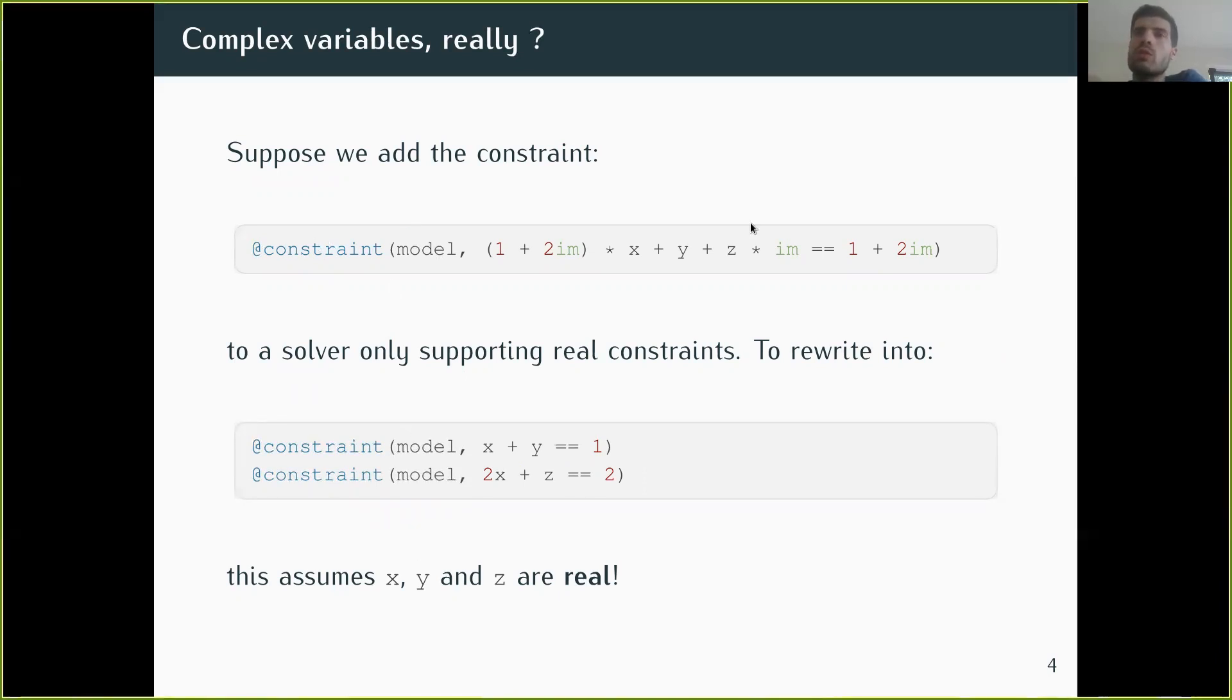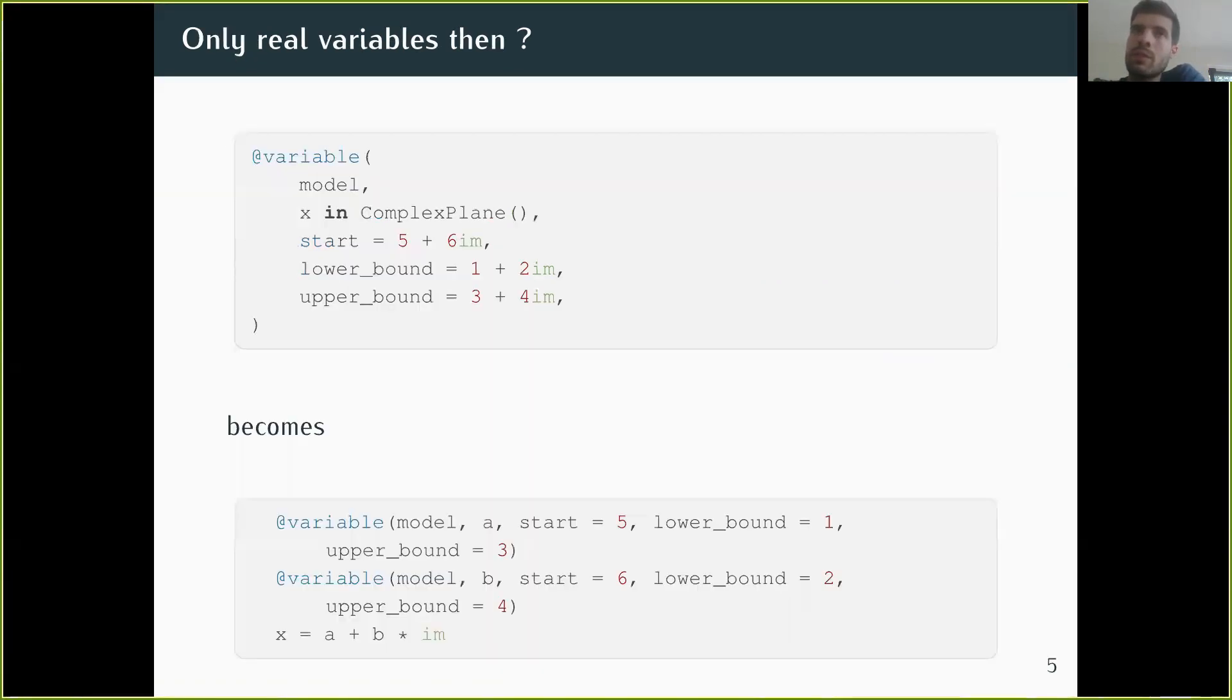This could violate assumptions in code already written in Jump. For instance, suppose you want to rewrite this because you're using a solver that only supports real constraints. You might think you can rewrite it by taking the real part and imaginary part into two equalities. But for this to be valid, you need x, y, and z to be real. If x is not real, this is incorrect because x might have real and imaginary parts as well. This gives a glimpse of how complicated things get if you start having variables that have real and complex parts.